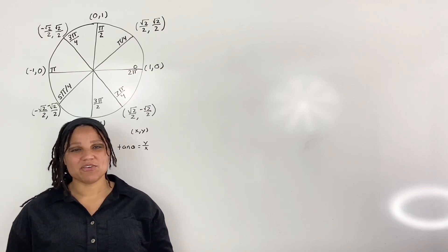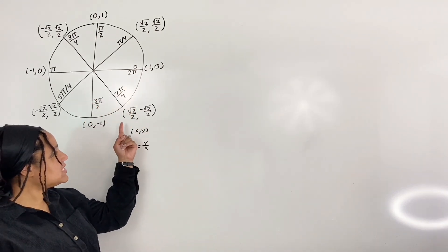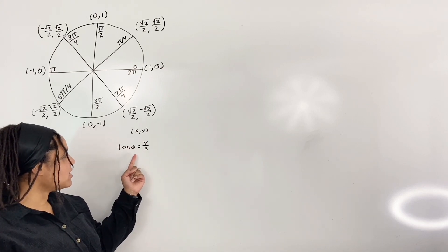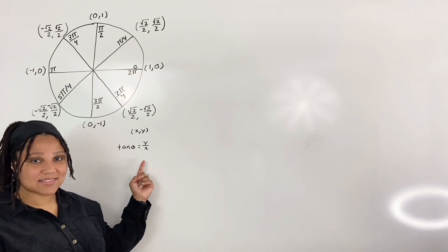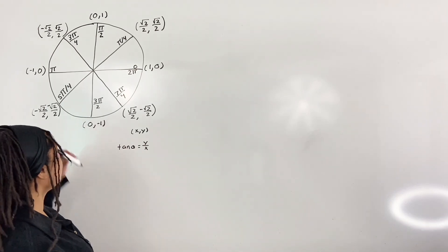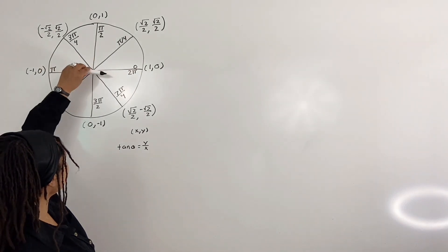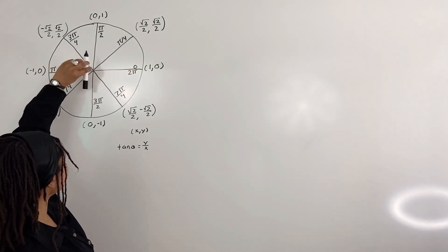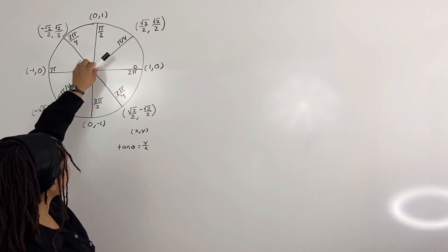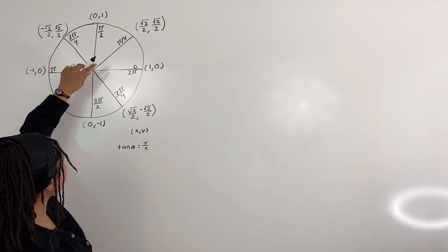We begin with what we already know. Recall the unit circle. Here we have angles and terminal points in the form x comma y, and we know that tangent of theta takes on the value y over x. So we will use these concepts to come up with our graph. We will be using our quadrantal angles, which are the angles with terminal points along the x and y axis, and also our 45-degree angles, which are the angles that are 45 degrees from the x and y axis.